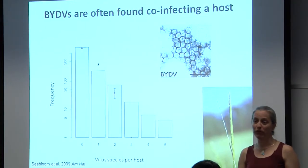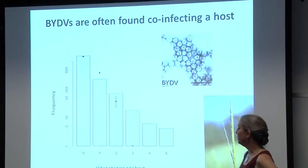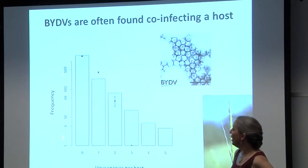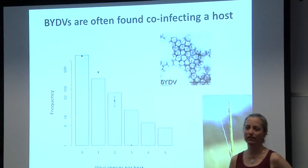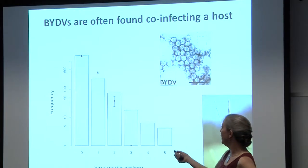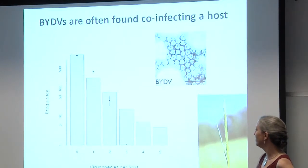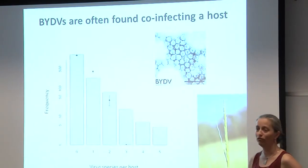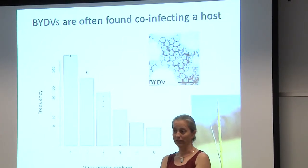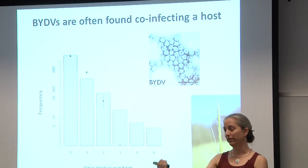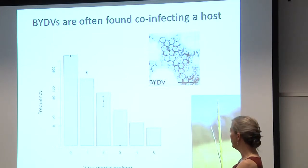This is just to show that we do find a lot of co-infection in the field. This is a study we published in 2009. On the y-axis is the number of plants; on the x-axis is the number of virus species within any individual. We have a whole lot of plants that are uninfected, but a very substantial proportion have one, two, three, four, or five different viral species within an individual plant. So we do see co-infection. That led us to think about changed transmission or changed virulence.